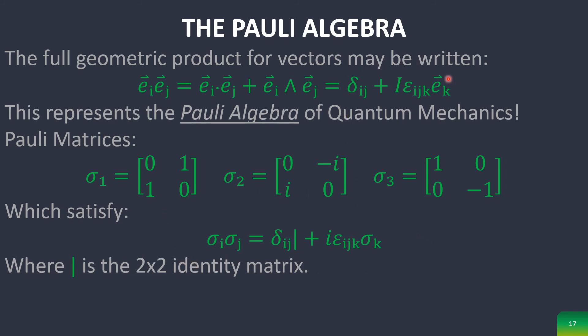And if you notice, this is the same equation as here. Therefore, the equations that describe the three-dimensional vector space are identical to the equations that describe the Pauli spin matrices.